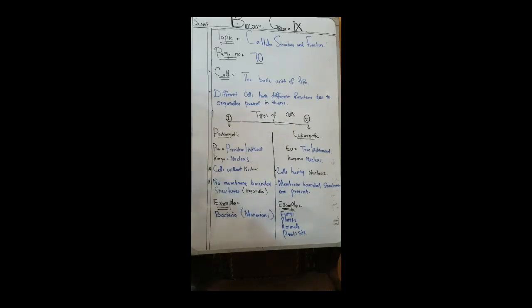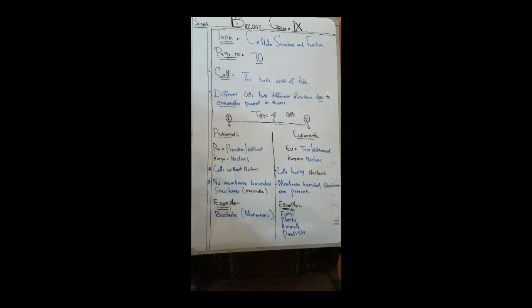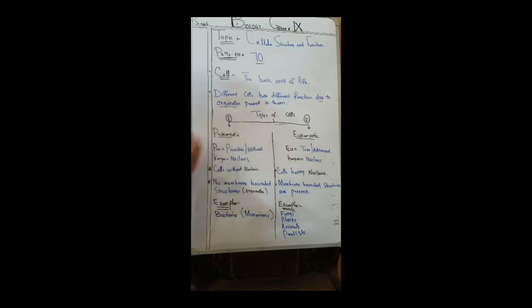Different cells have different functions. Now all cells, whether unicellular or multicellular, are of two types. One is prokaryotic and the other is eukaryotic. So we have two types of cells: prokaryotic cells and eukaryotic cells.